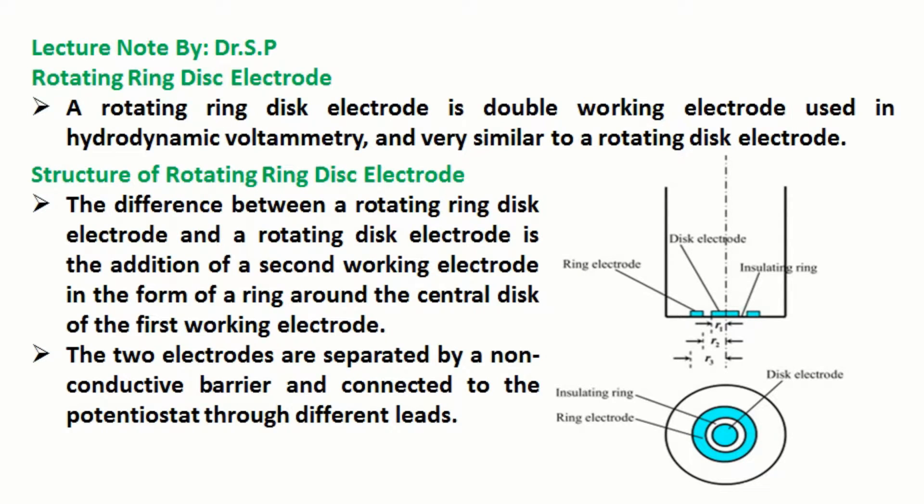In this tutorial we will discuss rotating ring disc electrode. A rotating ring disc electrode is a double working electrode used in hydrodynamic voltammetry, and very similar to a rotating disc electrode.